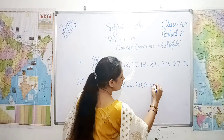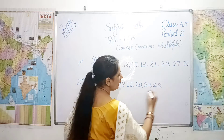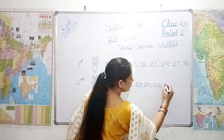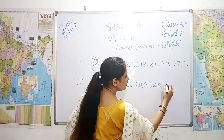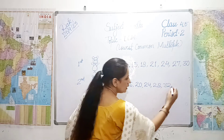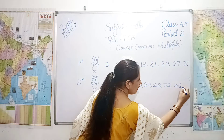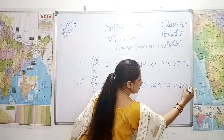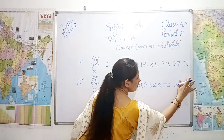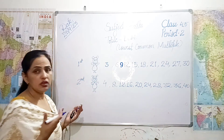Then twenty-eight, thirty-two, thirty-six, then forty. Very good. So you can see these are the tables of three and four.